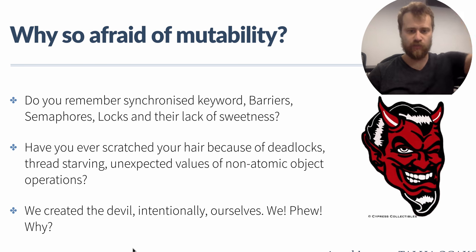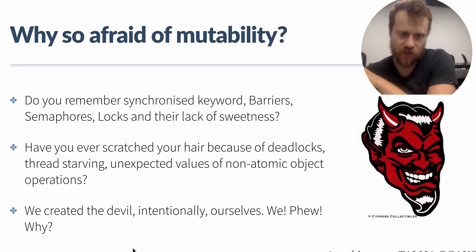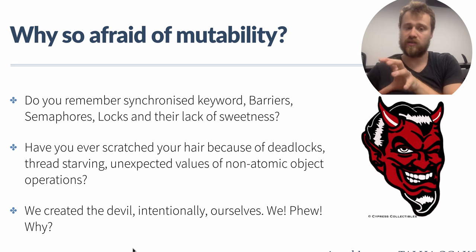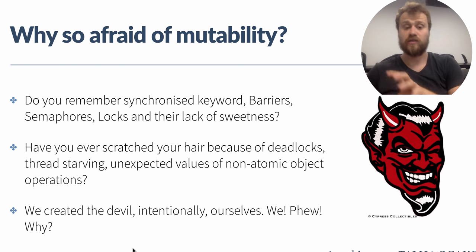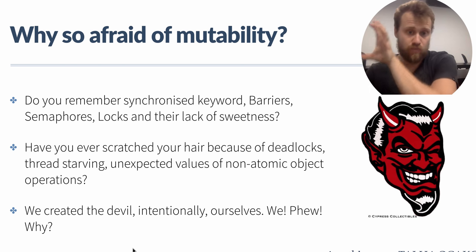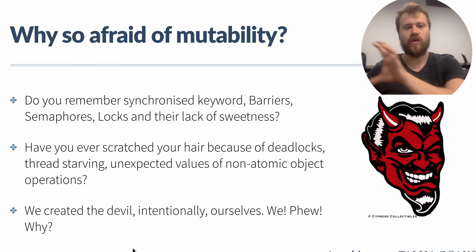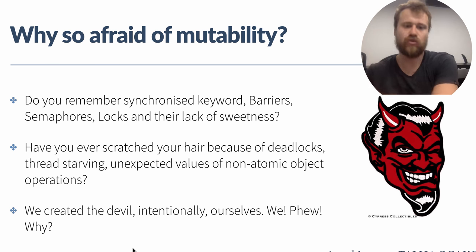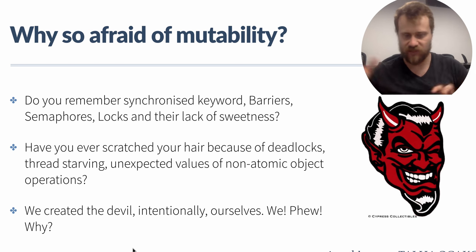If some common value is being modified by several threads or processes, some unexpected values may be encountered by some of those processes. This is an unexpected, undesired behavior, and that's why we are trying to synchronize the data — we are dealing with object states all the time.